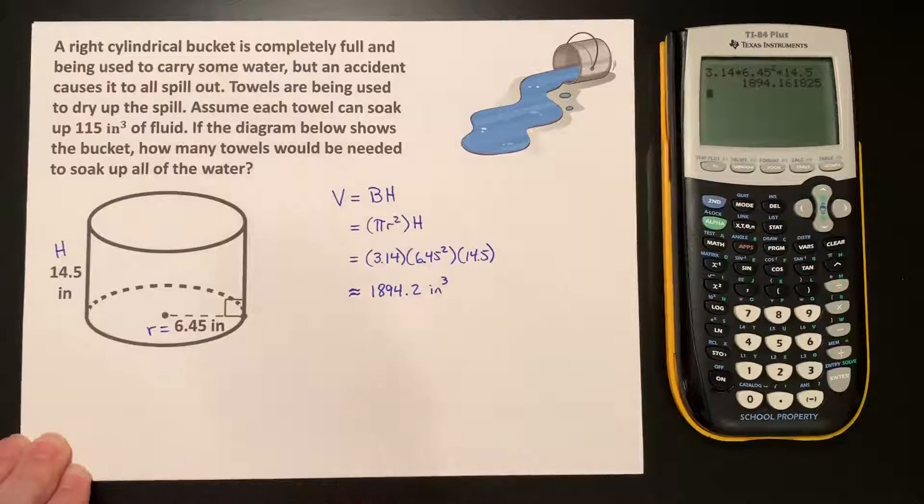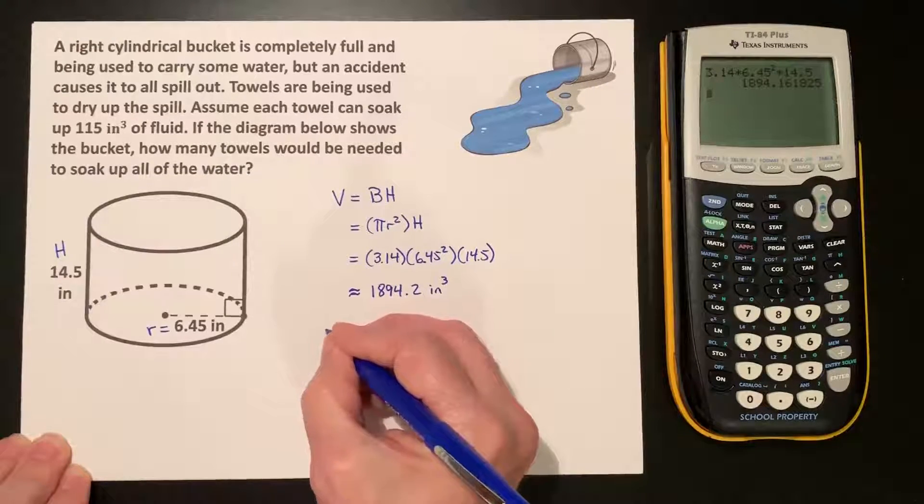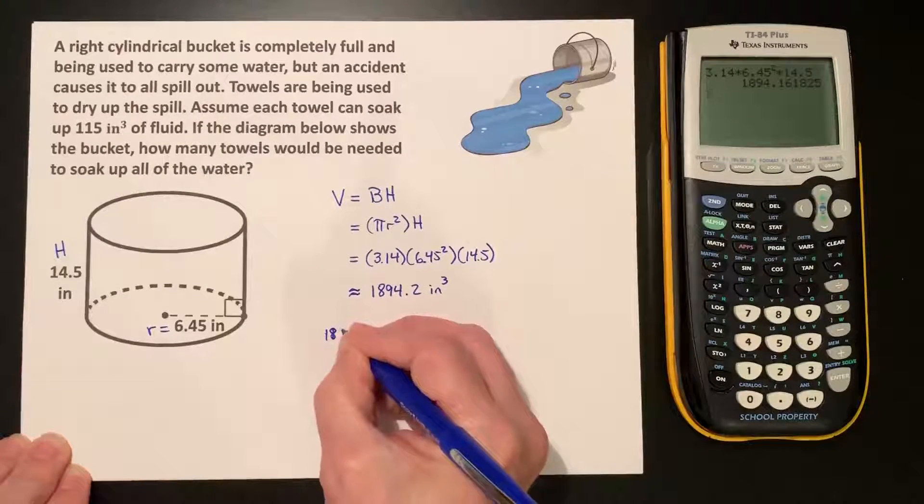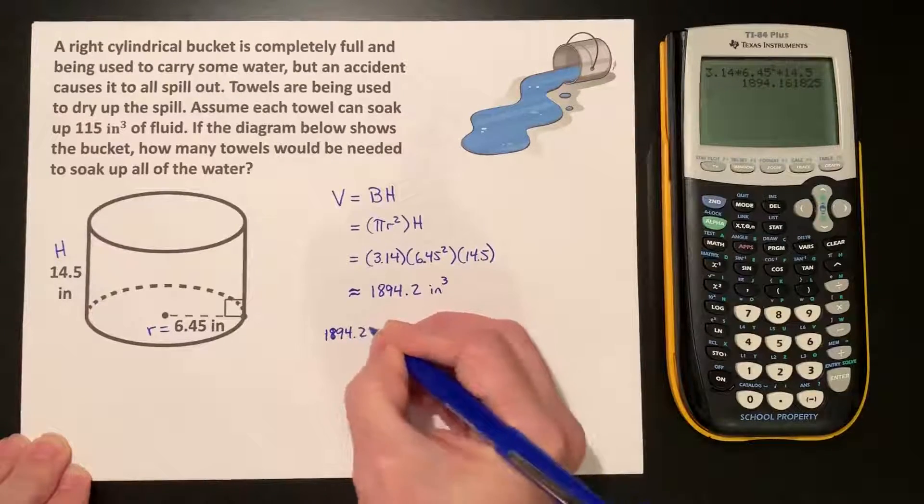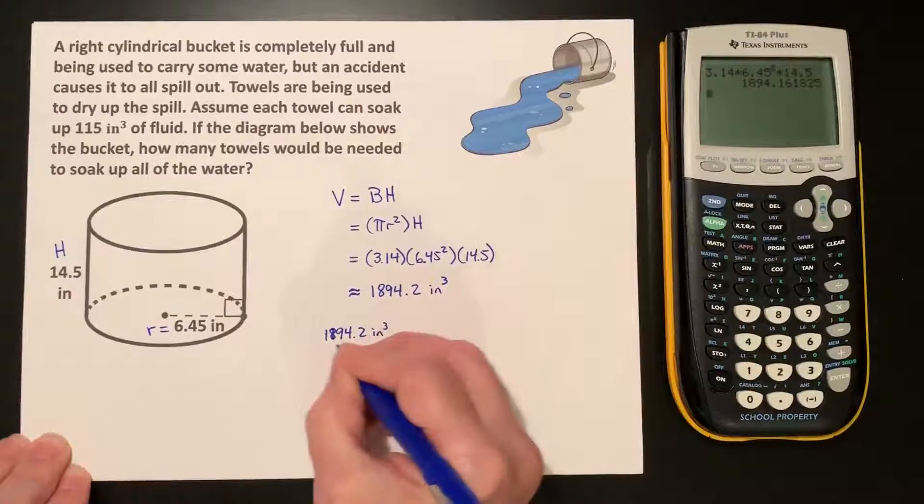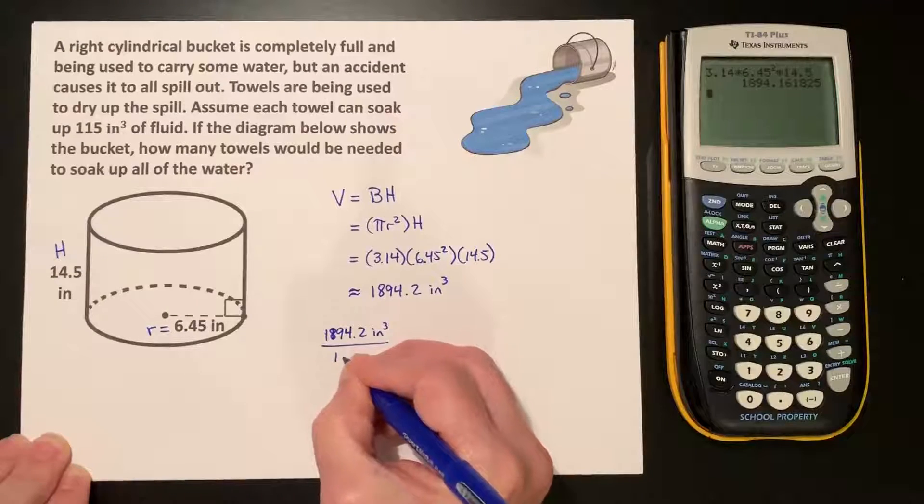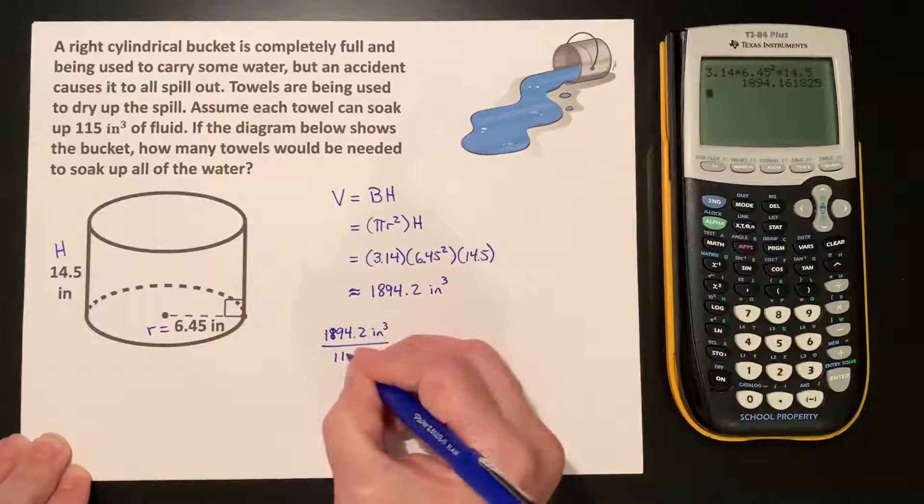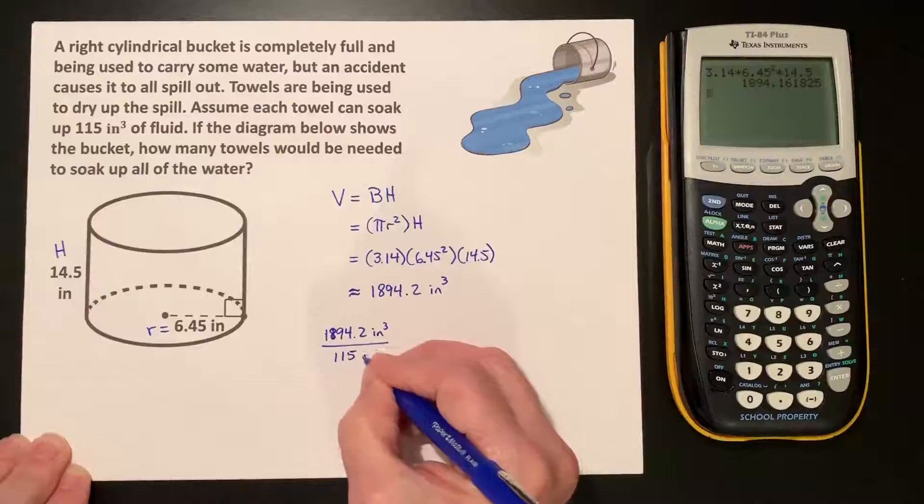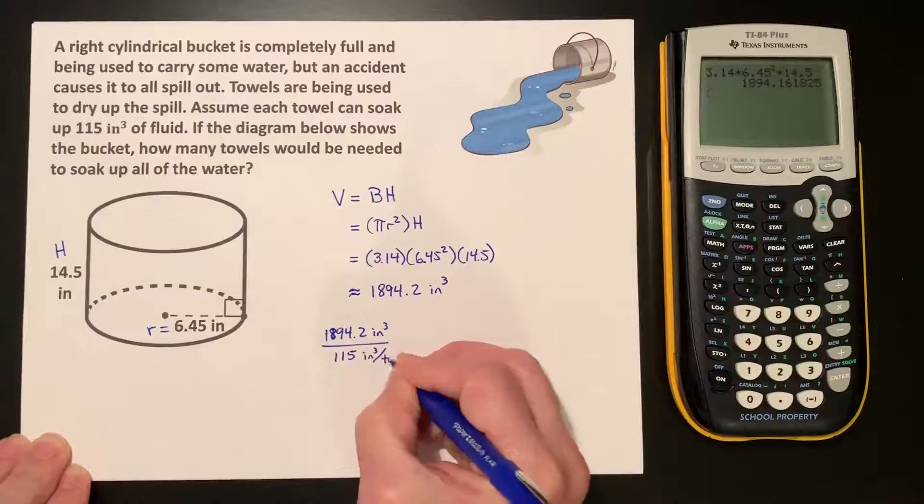Now each towel can soak up 115. So what we need to do is take this 1894.2 inches cubed and divide that by 115 inches cubed per towel.